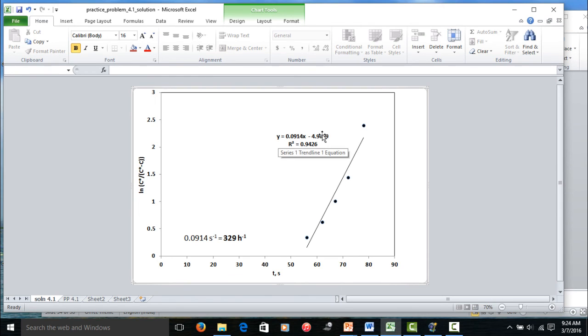And this is the equation, the fitted equation. The slope is 0.0914, 0.0914. Therefore, 0.0914, this is in seconds. So, the slope will be in second inverse, 0.0914 second inverse.